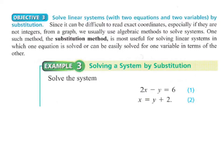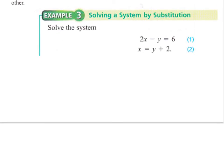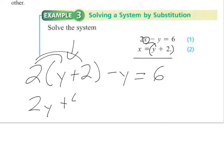Sometimes solving by graphing might be difficult, so we like to use algebraic methods. One such method is solving using substitution. The way we go about doing that is we take an equation like x equals y plus 2, and use that to substitute into the other equation for x. So we rewrite that second equation using y plus 2 in place of x, then distribute to get 2y plus 4 minus y equals 6. Notice now we have an equation with just one variable.